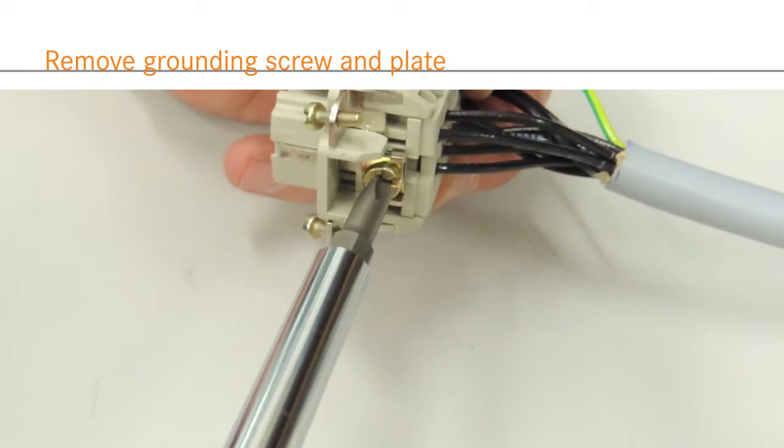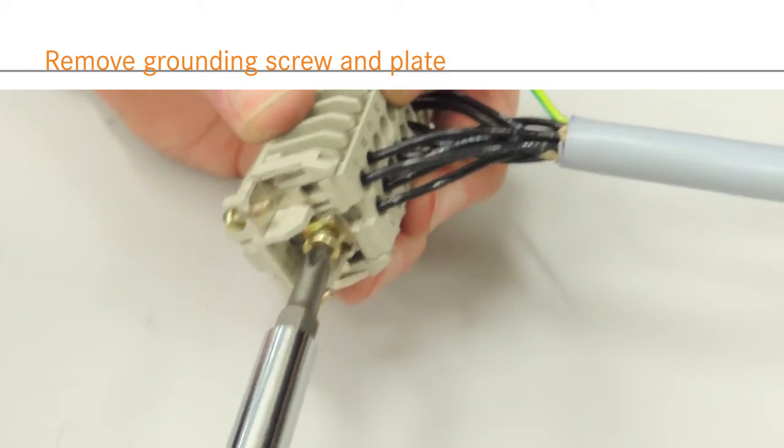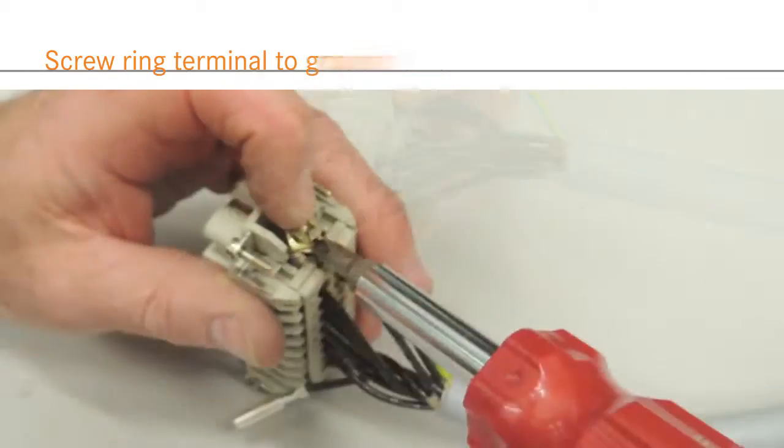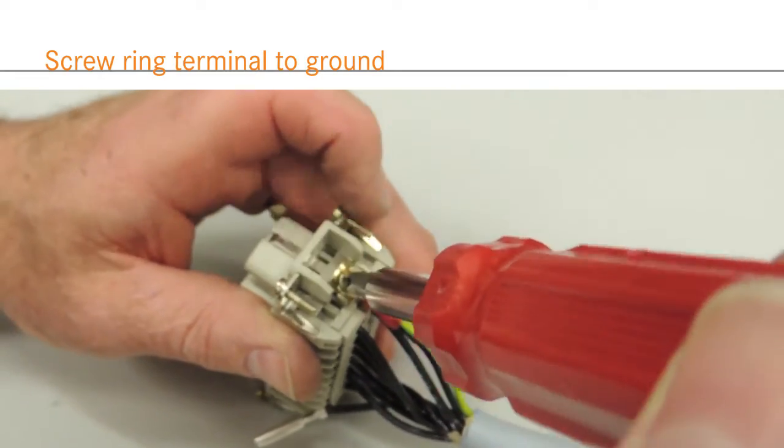To wire the ground, first remove the grounding screw and plate. Position the ground terminal under the grounding screw and plate and affix back in place.